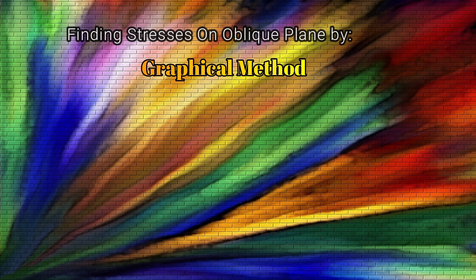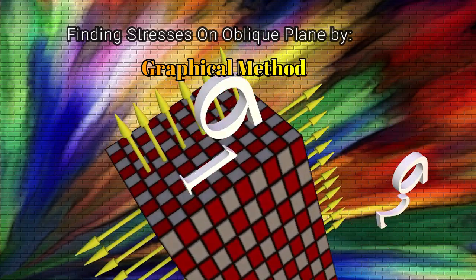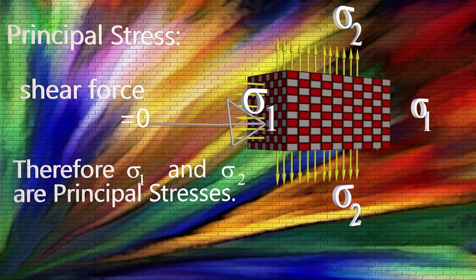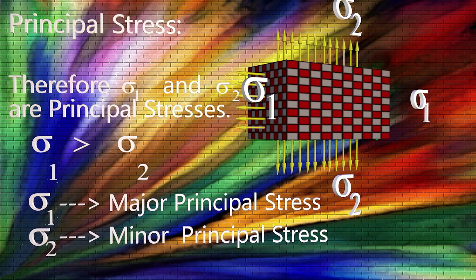Now let's move on to the graphical method. Consider a rectangular member subjected to tensile stresses sigma_1 and sigma_2, where sigma_1 is greater in magnitude than sigma_2. We are required to find the stresses on an oblique plane inclined at angle theta to the normal plane. First, note that if only normal stress acts on a plane with no shear stress, that normal stress is called a principal stress. Since sigma_1 is greater than sigma_2, sigma_1 is called the major principal stress and sigma_2 the minor principal stress.